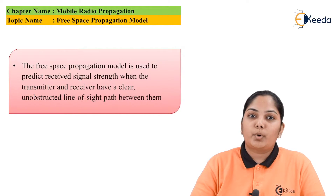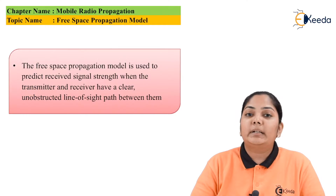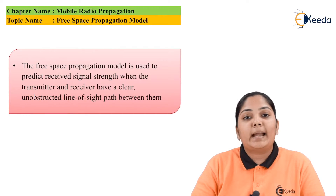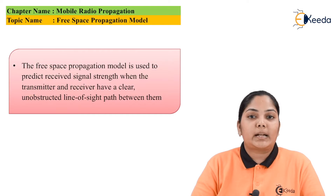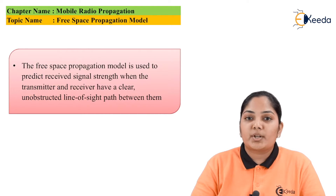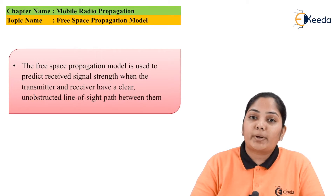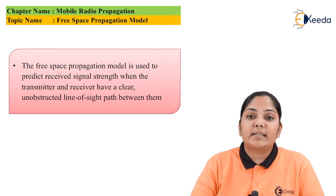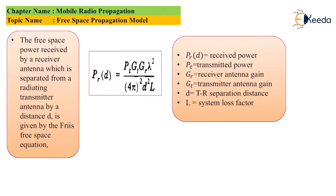Now we will move on to the free space propagation model. In the free space propagation model, it is assumed that there is a line of sight between the transmitter and receiver — meaning there is no obstruction between them. Since there is no obstruction, we are able to calculate the signal strength of the received signal.